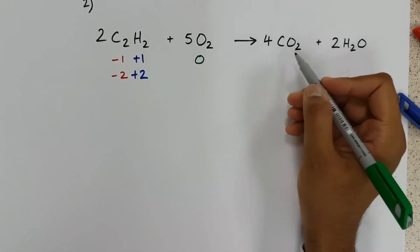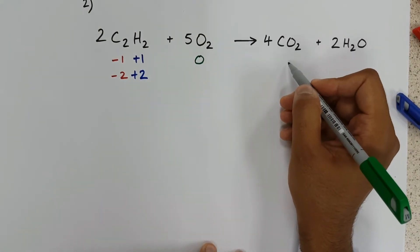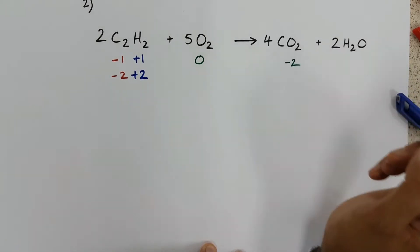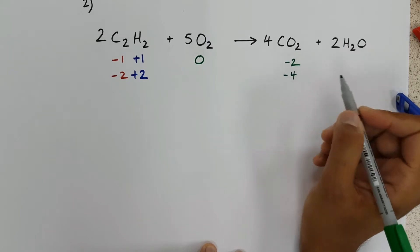Coming across here, oxygen is now combined with carbon. Therefore, the oxidation state is minus two. There are two oxygens, therefore overall, minus four.